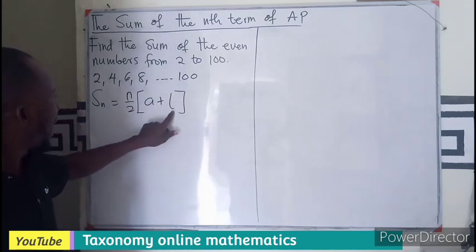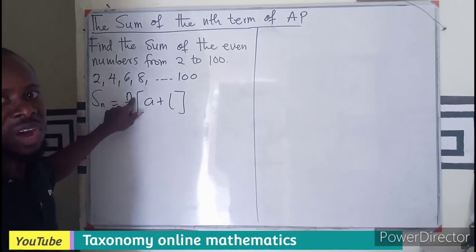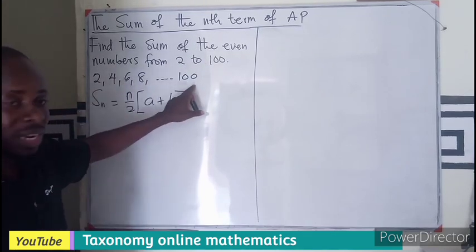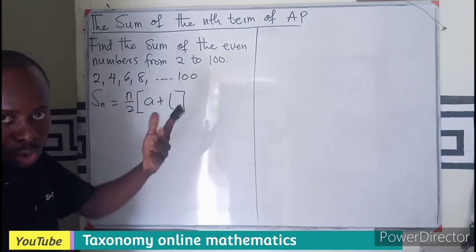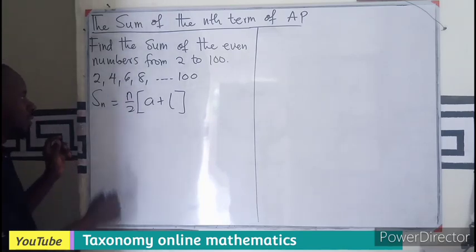So this will be put here, first term will be put here. Then n is what I need to find. How many terms are here? Are they up to 100? Can we say it is 50 because we are saying 2 for us is even? We don't know. We have to find out.